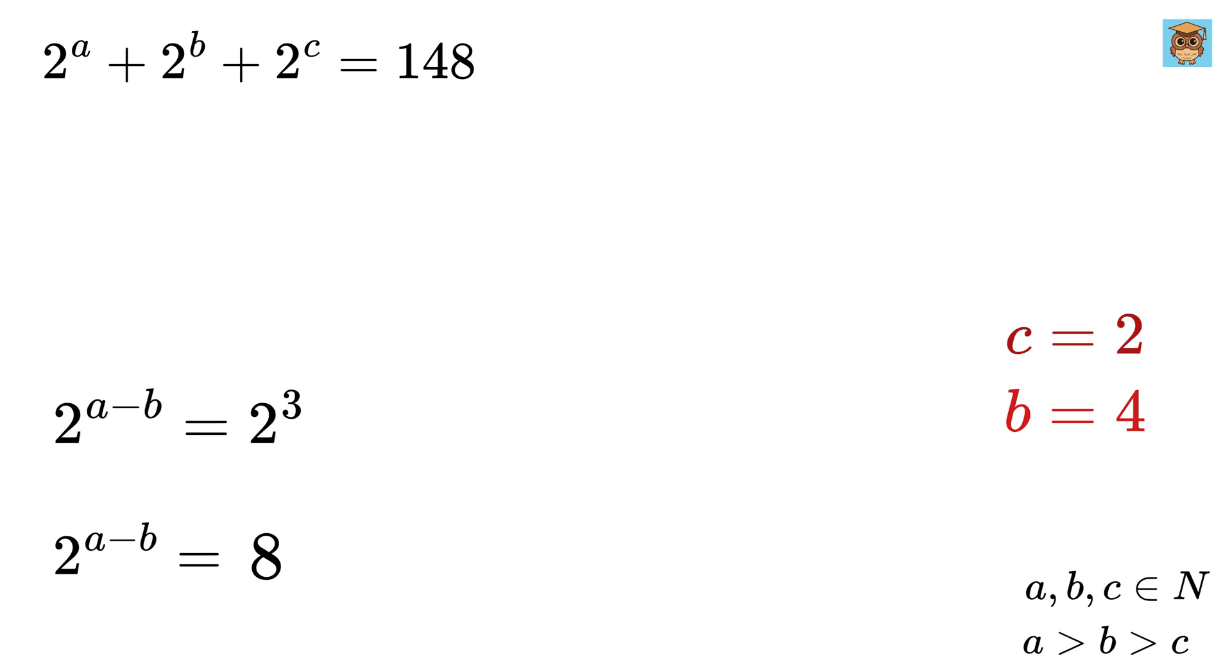We are almost there. Write 8 as 2 cubed, and therefore, when we compare both of them, we get A minus B equals 3. So, we get A equals 3 plus 4 or 7, and that's it.